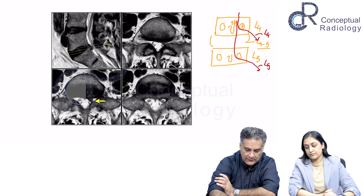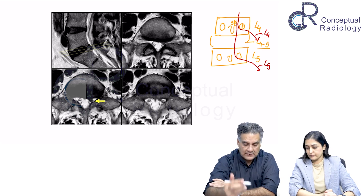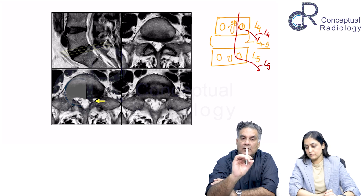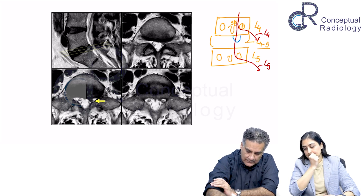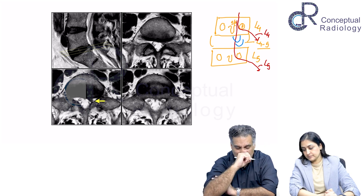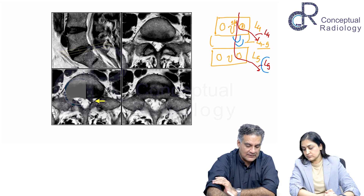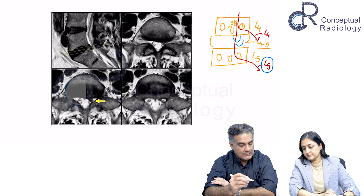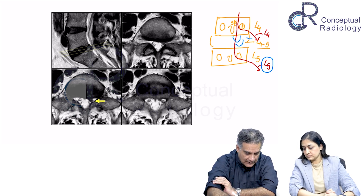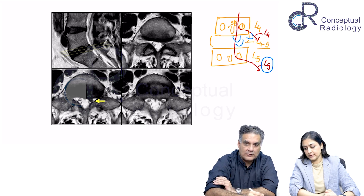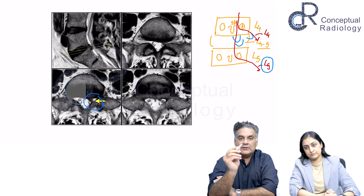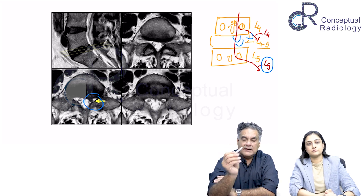The majority of disc prolapses are posterolateral, or rarely foraminal or far lateral. If the disc prolapse occurs at that posterolateral area, it is going to compress the L5 nerve root, because that is the nerve root which is traveling — it is the traversing nerve root. However, if it is a foraminal or far lateral disc prolapse, then it can compress the exiting nerve root at the same level. A radiologist drawing an arrow in the image is telling you which nerve root is getting compressed.